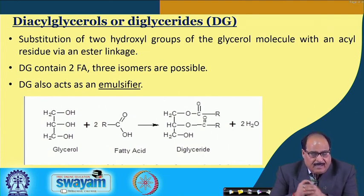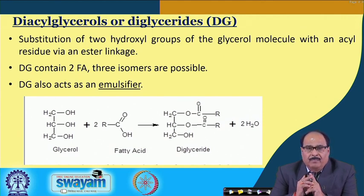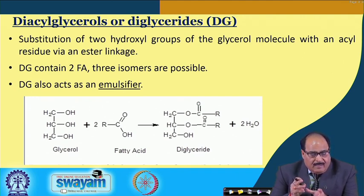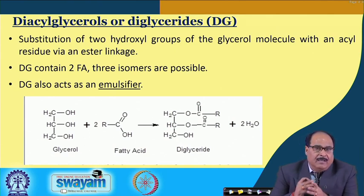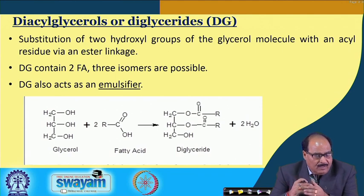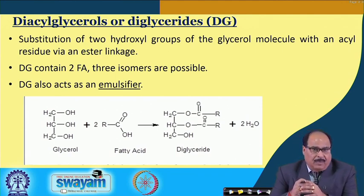In diacylglycerols, two hydroxyl groups of the glycerol molecule are esterified with two fatty acids. Again three isomers are possible: SN1,SN2; SN1,SN3; or SN2,SN3. Diglycerides also act as emulsifiers.